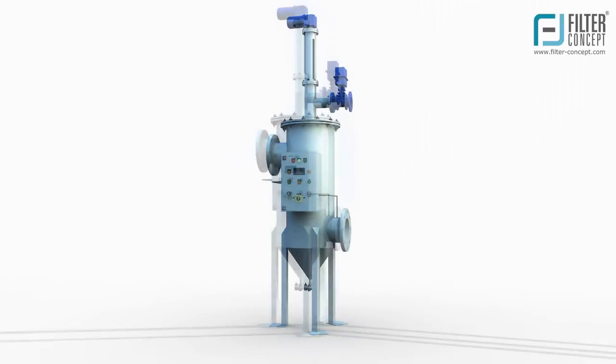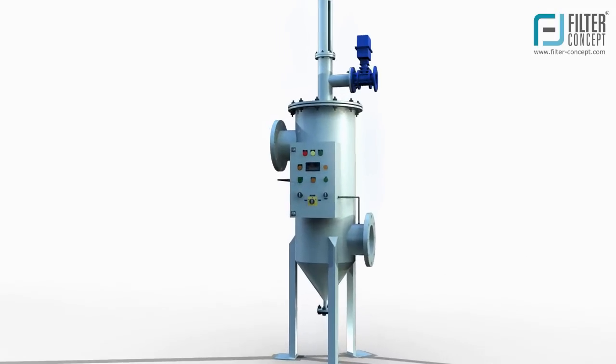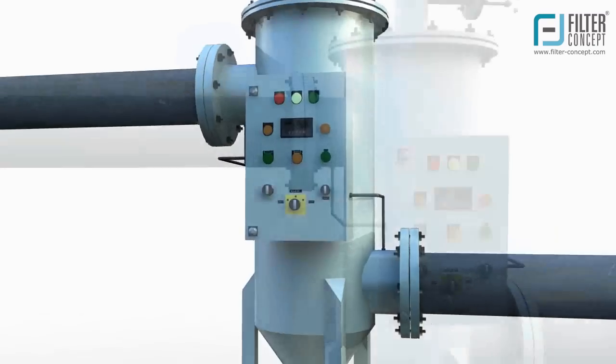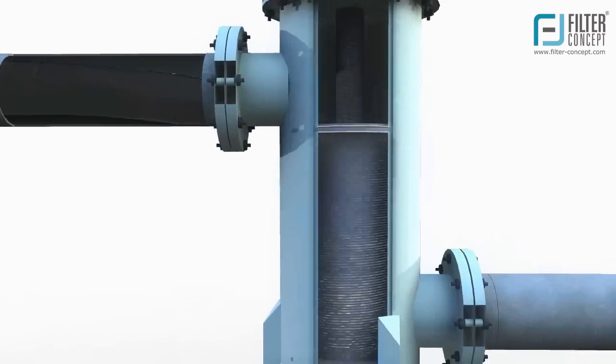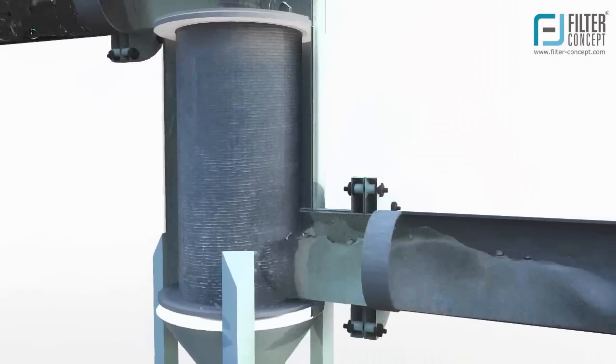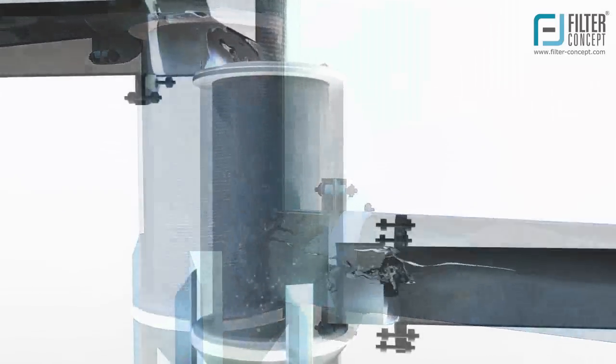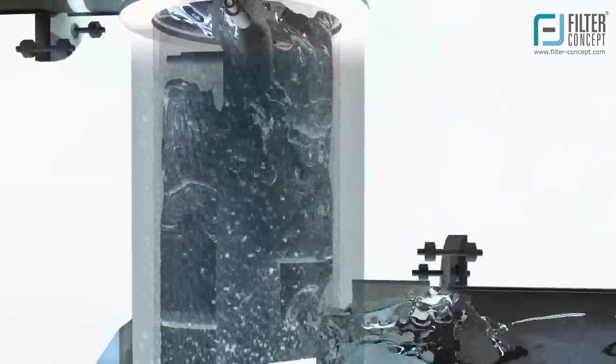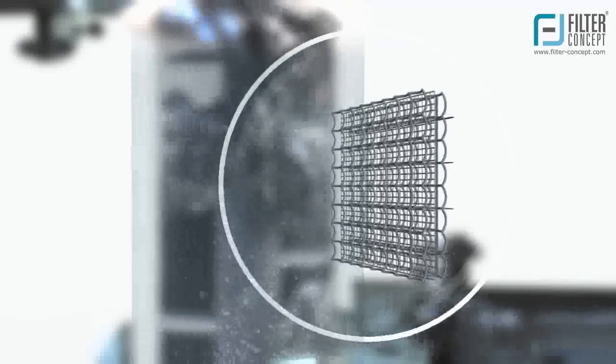Auto Self-Cleaning Filters are designed for flow direction from inside to outside. Contaminated fluid enters into filter housing through inlet connection. Clear filtered material comes out from filter housing through outlet connection. It passes throughout the inner surface of filter element.